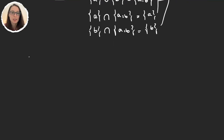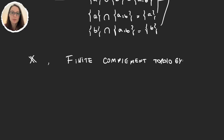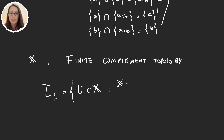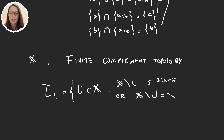The next topology, for some set X, is called the finite complement topology. We call it T_f. It is the collection of all subsets U of X such that either X minus U (the complement of U) is finite, or X minus U equals X itself. Let's go ahead and prove this set is a topology.